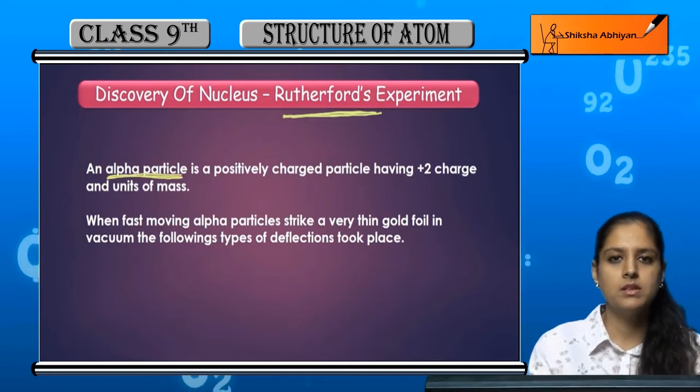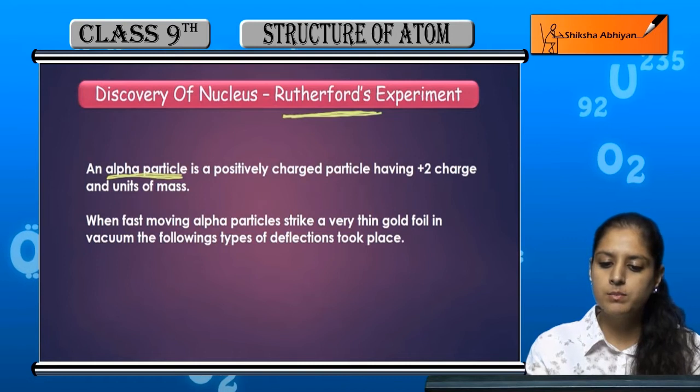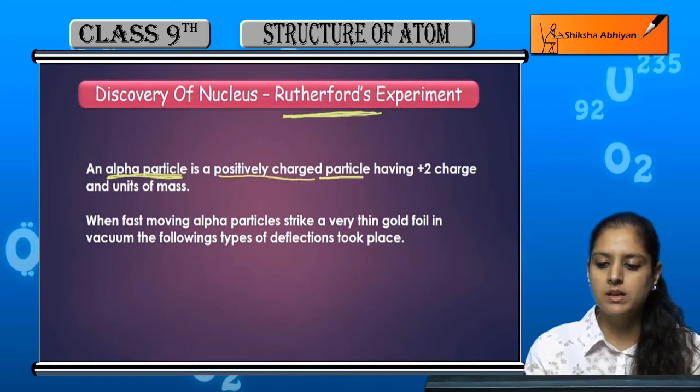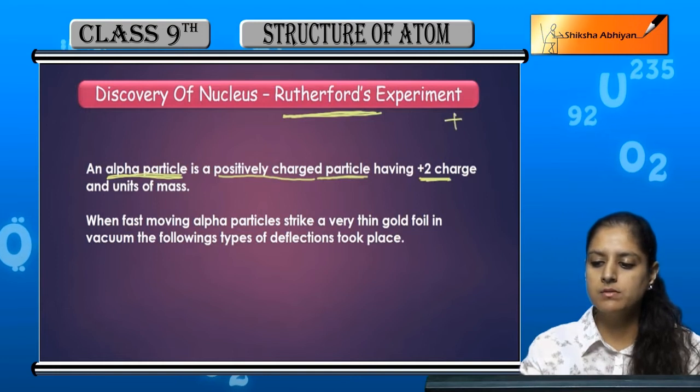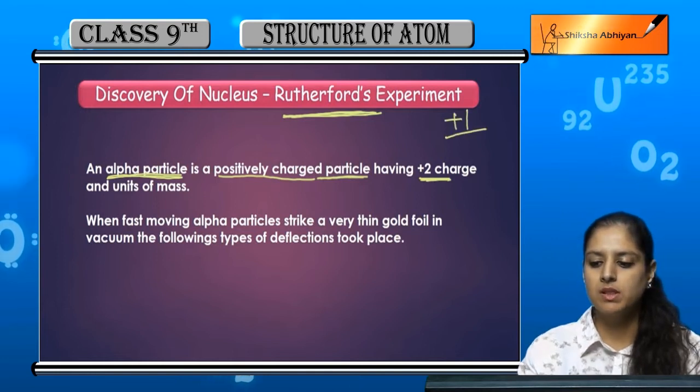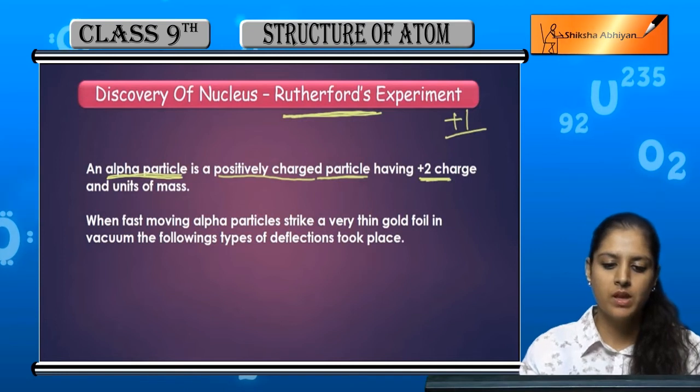An alpha particle is a positively charged particle having plus two charge. A proton has plus one charge, but alpha has plus two charge, meaning it has two protons and unit mass.